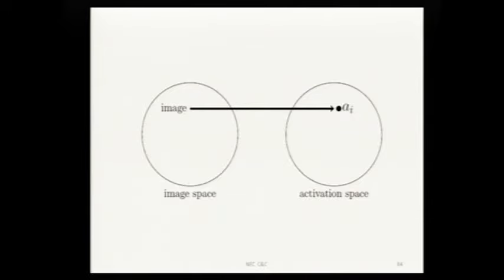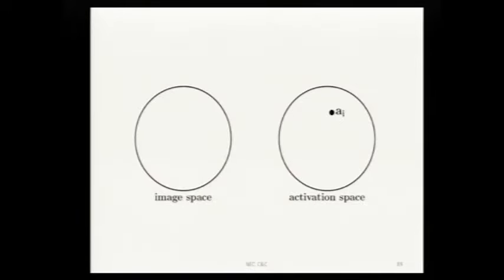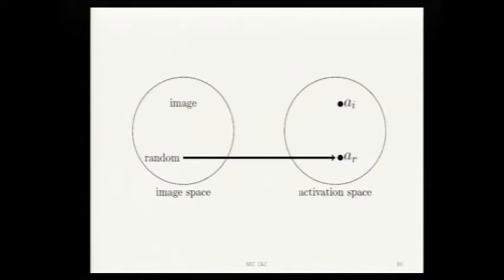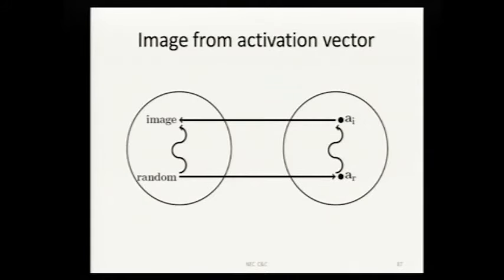If I have an image, it's easy to find the activation vector. I simply put it into my network and see what the activation vector is. But suppose you gave me an activation vector and wanted to know what image produced that. There are many ways to solve this problem. Pick a random image, find out what its activation vector is, then do gradient descent on the pixels of the random image to move this activation vector up to that activation vector. That will convert your random image to the image that produced the activation vector. I wanted to point out that you could go from activation space back to the image.